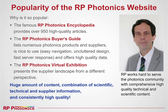Why is the RP Photonics website so popular? The main reason is of course my famous encyclopedia providing over 950 high quality articles. Then the buyer's guide lists numerous Photonics products and suppliers, is also very nice to use and offers high quality data. Finally, the exhibition presents the supplier landscape from a different perspective. All together we have a huge amount of content — a combination of scientific, technical, and supplier information just as needed by professionals in the field, and all that with consistently high quality. I am working really hard on that website, and I am very happy to see how much it helps the whole Photonics community worldwide.